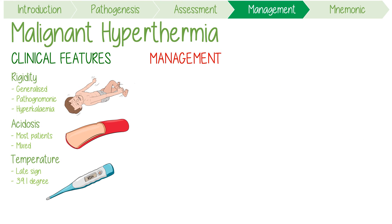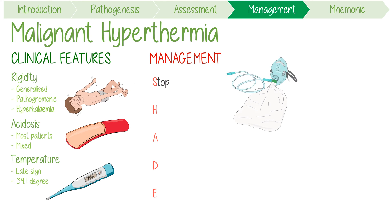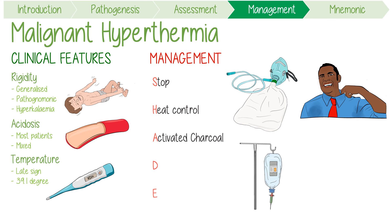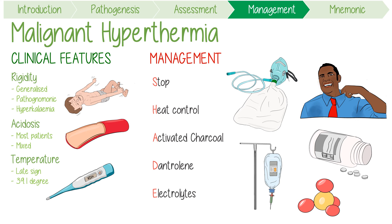The mainstay of treatment for malignant hyperthermia can be easily remembered with the SHADE acronym. This stands for stopping and discontinuing the inhaled agent, achieving heat control by cooling the patient down — potentially with cold IV fluids — using activated charcoal filters to remove residual agents from the anesthetic workstation, giving the patient D for dantrolene, which is a muscle relaxant used as an antidote. Finally, consider checking and optimizing the patient's electrolytes, as hyperkalemia can be fatal.